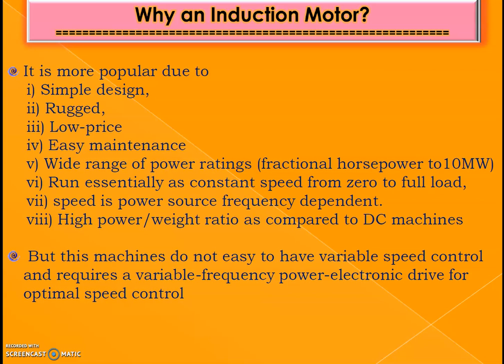So why is the induction motor so popular? The first reason is its simple design — it is simpler than other machines such as DC machines. It is rigid and low-priced compared to DC machines, as fewer parts are required. It is easy for maintenance, as there are no windings on the rotor in the case of the squirrel cage type. It is also available in a wide range of power ratings from fractional horsepower to 10 megawatts.